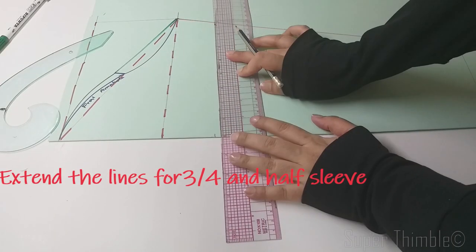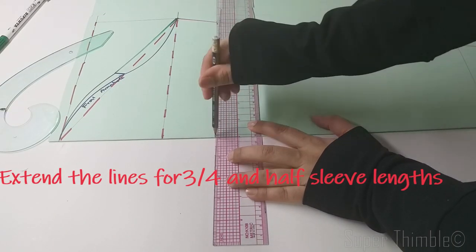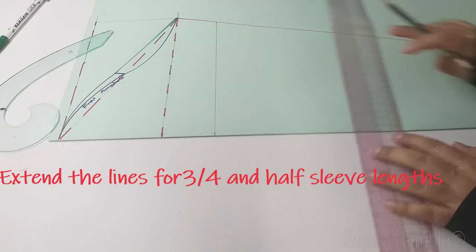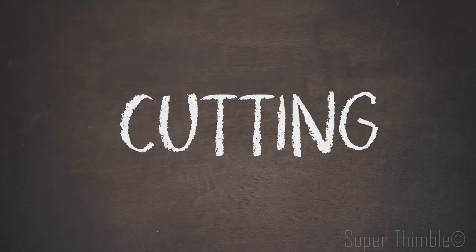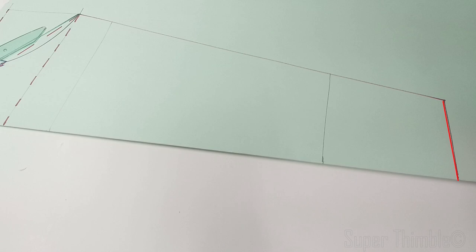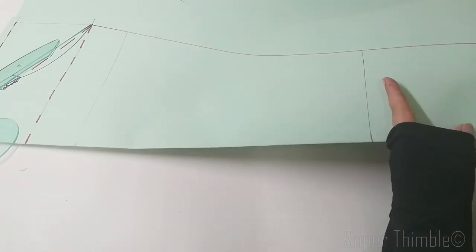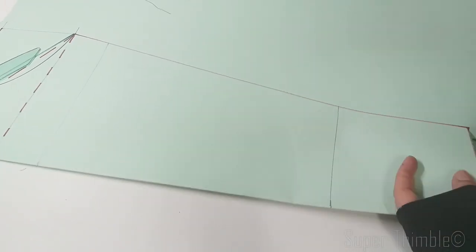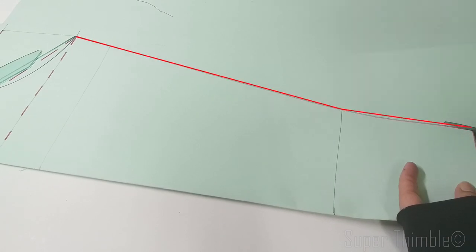Extend lines of the three-fourth and half sleeves length which we marked in the beginning. Start cutting from the hemline, then add the sides.